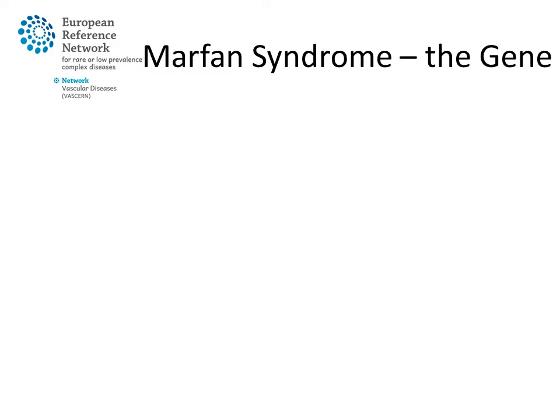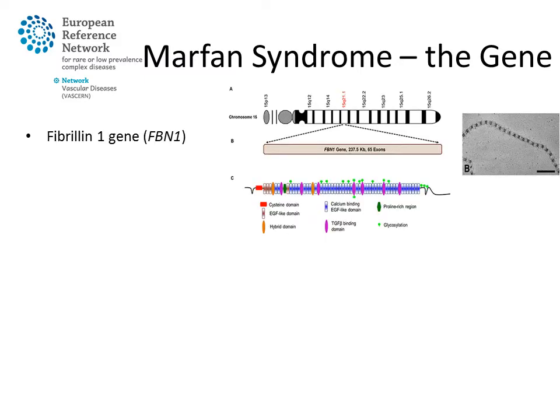Pathogenic variants in the fibrillin-1 gene, located on chromosome 15, have been identified as the underlying cause of Marfan syndrome more than 25 years ago. The fibrillin-1 gene encodes for the fibrillin-1 protein, which is an important component of connective tissue. Since the discovery of the gene, over 3,000 different variants have already been identified, spread throughout the gene, and nearly all patients or families harbor their own private mutation.